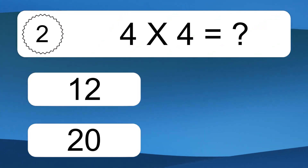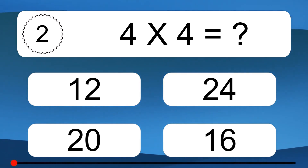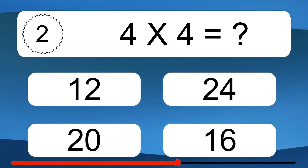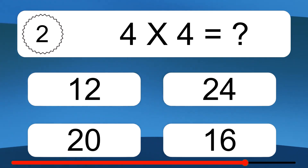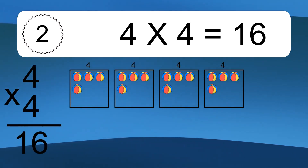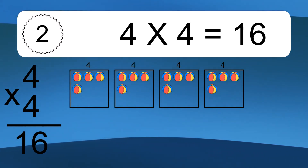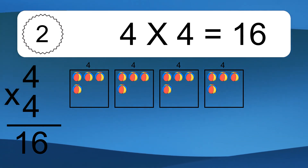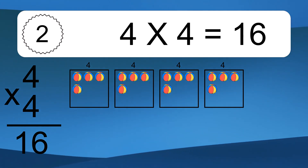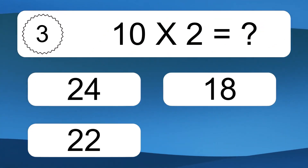4 times 4 equals what? 4 times 4 equals 16. We have 4 boxes, and each box has 4 colorful balls inside. If you count all the balls in all the boxes together, you will have 4 times 4 balls. This equals 16 balls. 10 times 2 equals what?